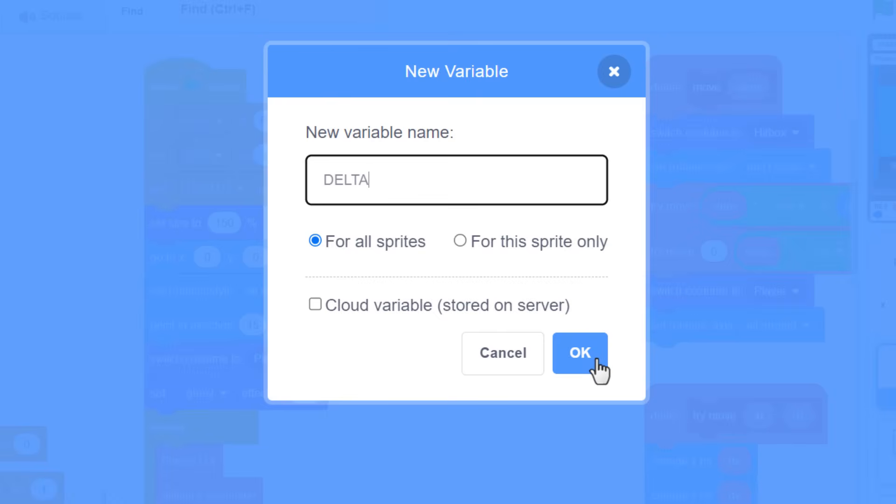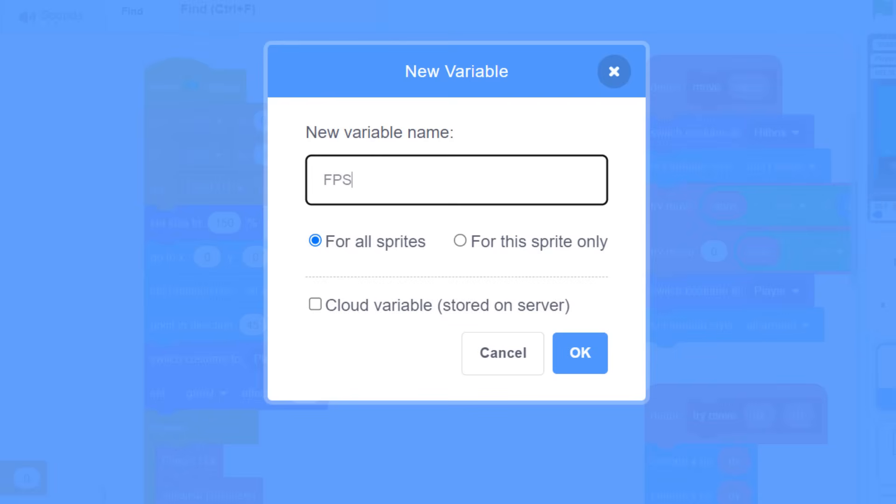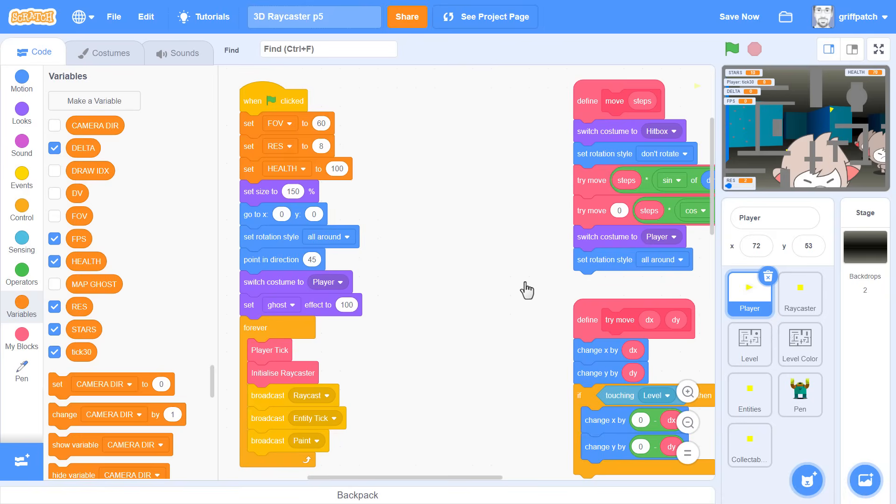This will record the time it takes to render 1 frame. And finally, FPS or frames per second, also for all sprites. This will be our readout of the final frame rate. Excellent.